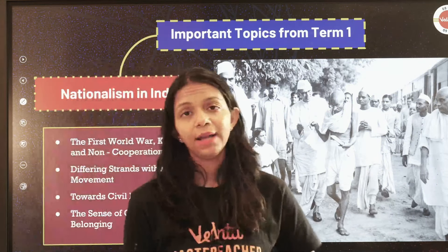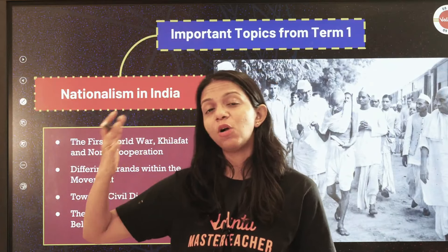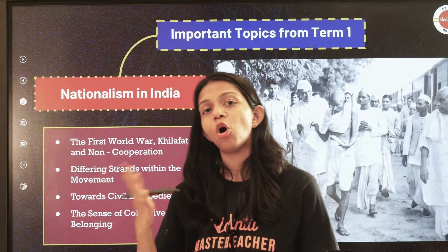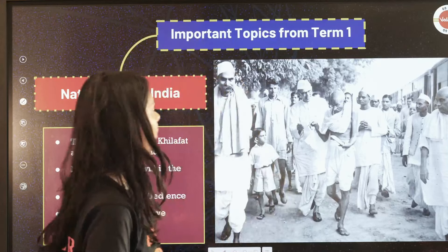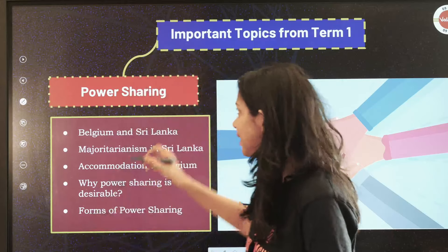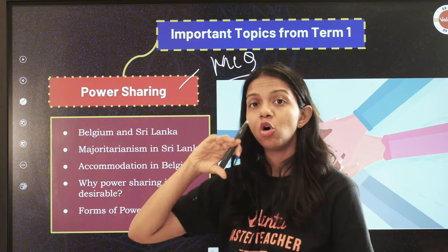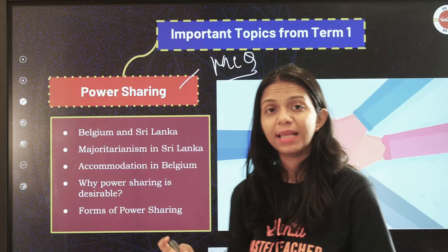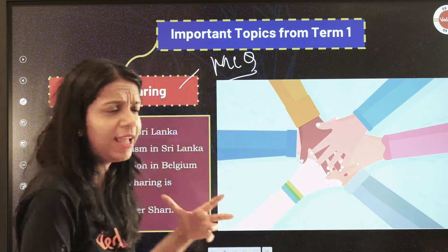For 'Nationalism in India,' the most important areas are the First World War's connection to the Non-Cooperation Movement — its causes and impact; and the Civil Disobedience Movement — its call, cause, and spread. These parts are very heavily tested. For Power Sharing, MCQs dominate, covering the Belgium and Sri Lanka stories and forms of power sharing — you need to understand it conceptually.